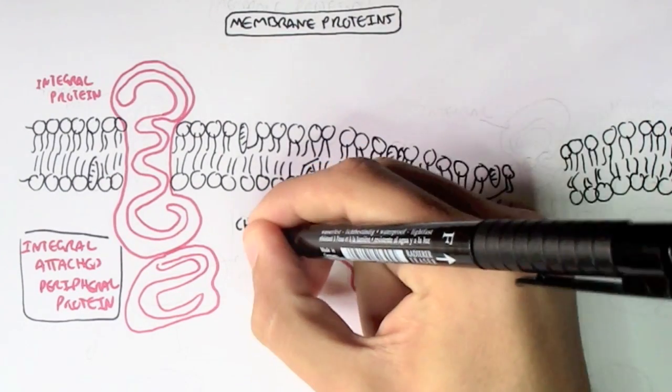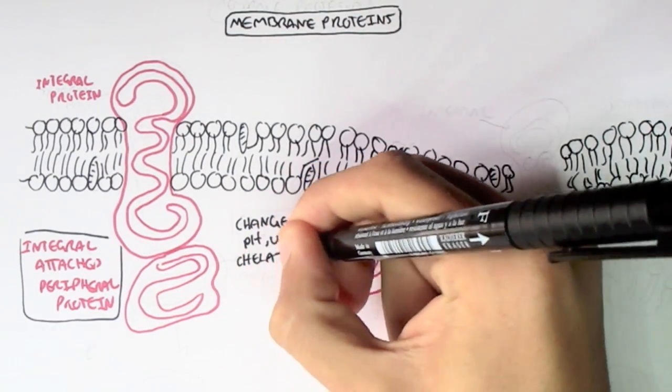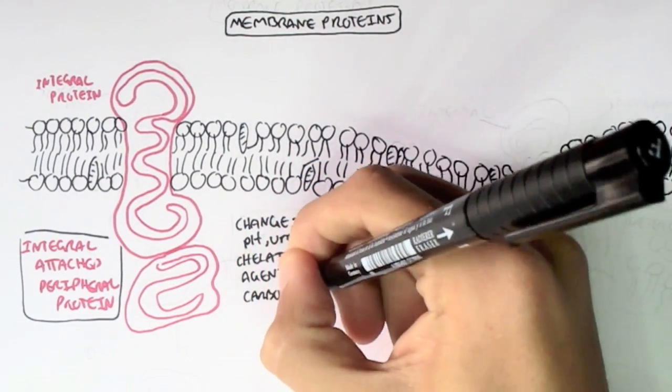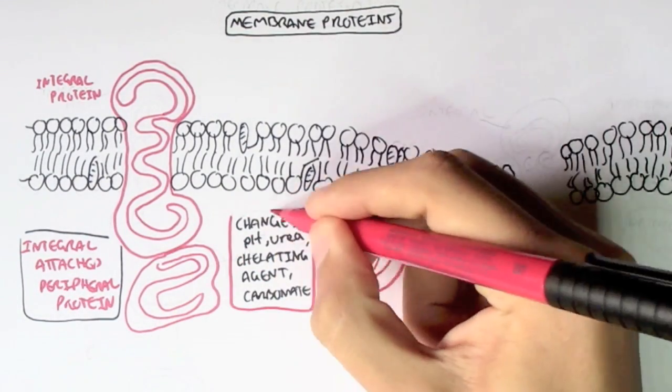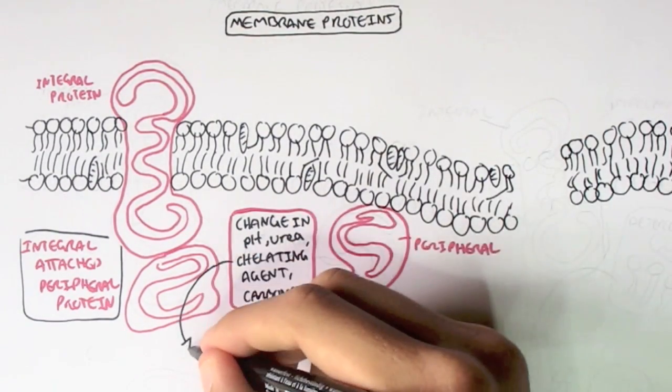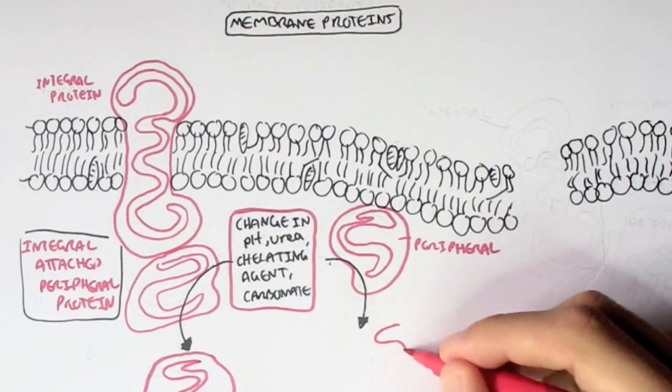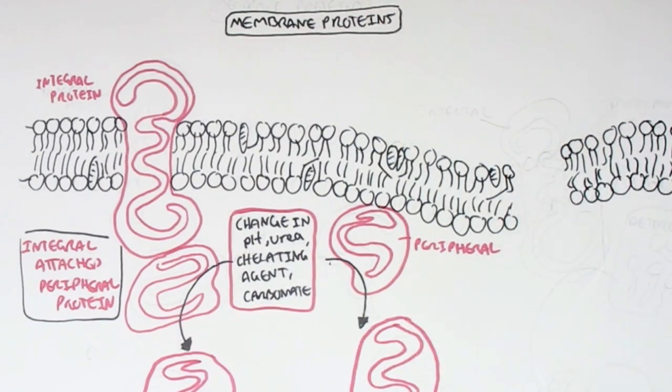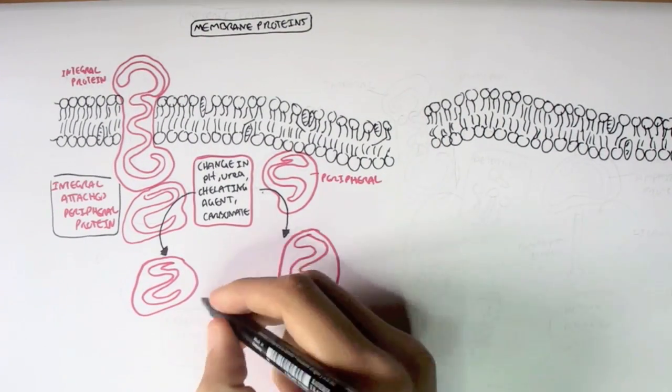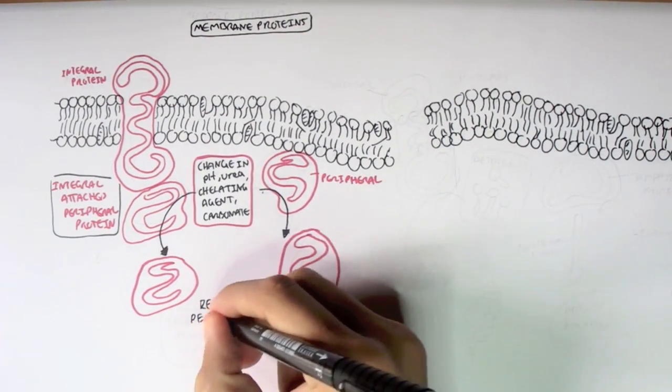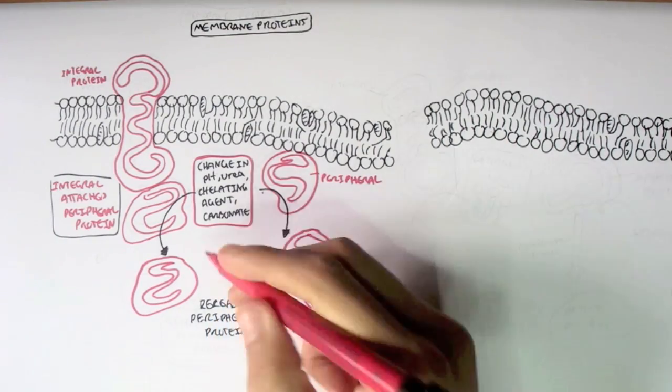Remember, I mentioned that a change in pH, urea, or addition of chelating agents, or carbonate, can actually remove peripheral proteins from where they are attached. In this case, a peripheral protein is removed from an integral protein and one that is bound to the membrane. And so these types of chemicals actually release the peripheral proteins.